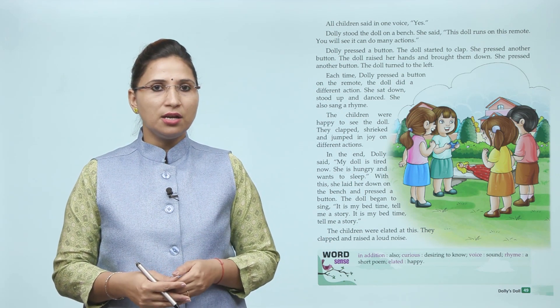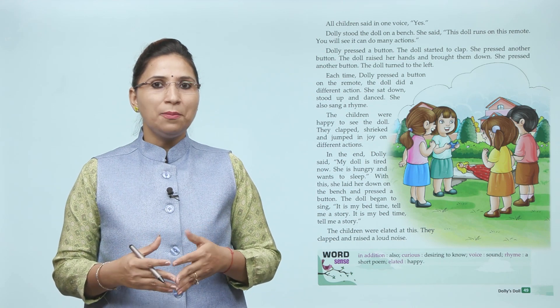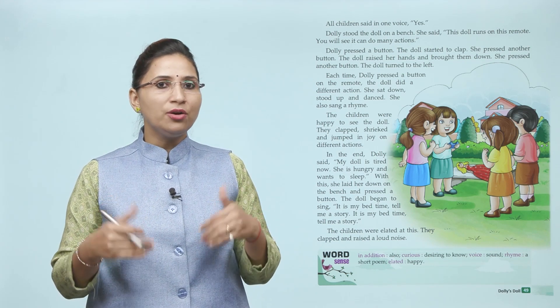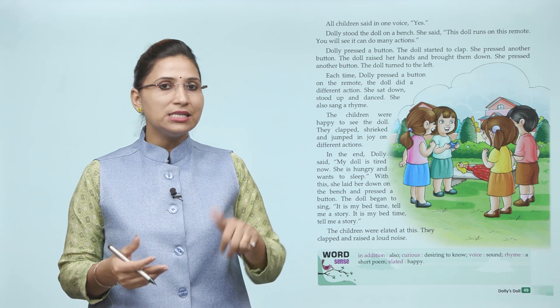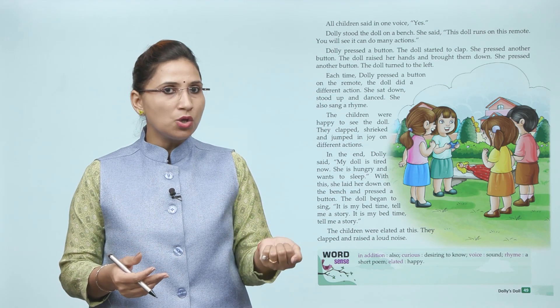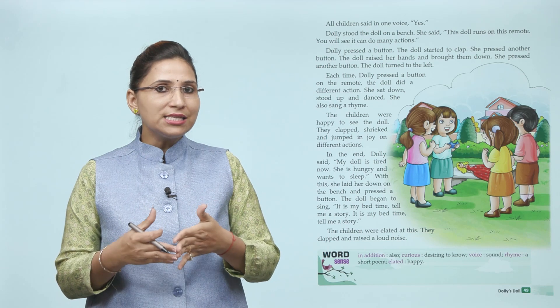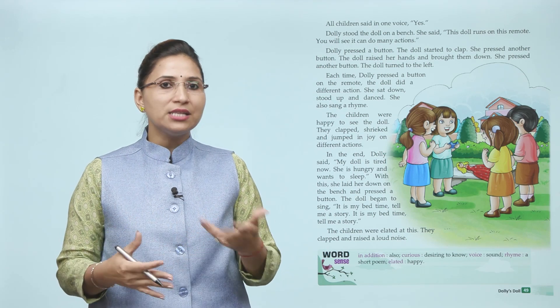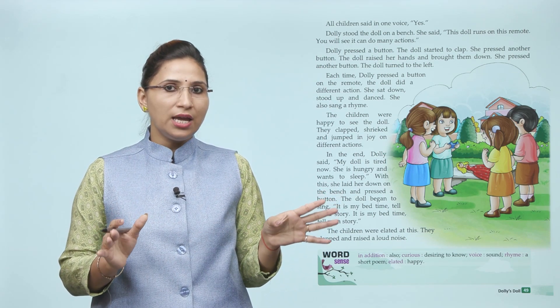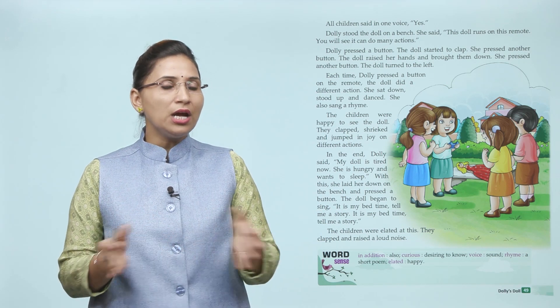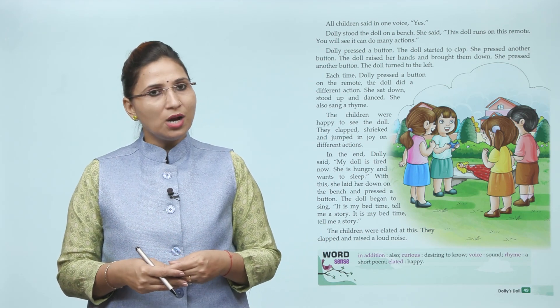Dolly pressed a button — the doll started to clap. She pressed another button — the doll raised her hands and brought them down. She pressed another button — the doll turned to the left. Jaise jaise remote ko press kar rahi hai alag alag buttons ko, toh doll clap karna start kar deti hai, raised karna start karti hai apne hands ko, aur uske baad left mein bhi turn karna shuru kar deti hai.